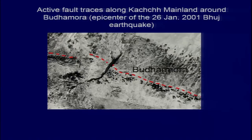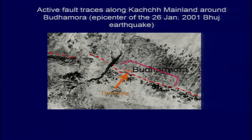Coming to the Kutch region — this was the area marked as the epicentral zone. The rupture did not come right up to the surface, but there was surface deformation which accompanied the ground shaking. We did trenching and a detailed survey in this region, which showed us the zone of lateral spreading. Taking the cross section, this is south and this is north — a very gently sloping surface here.